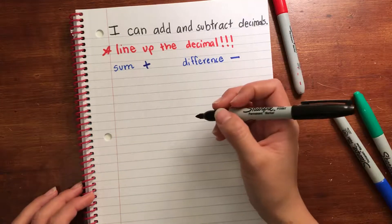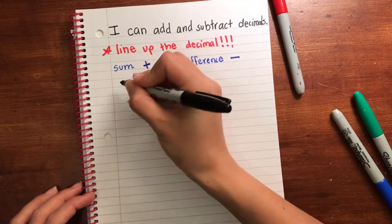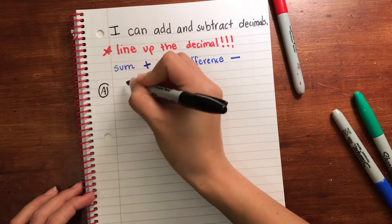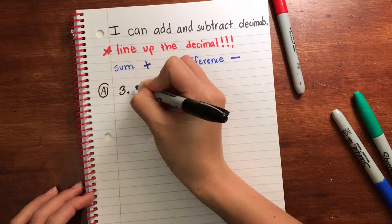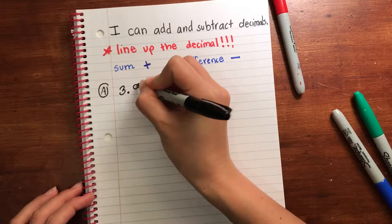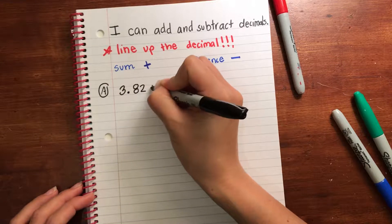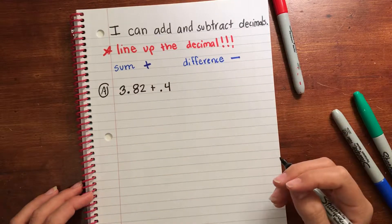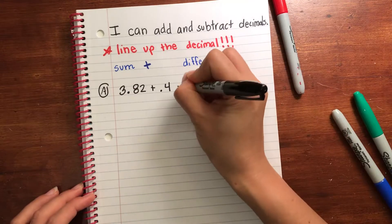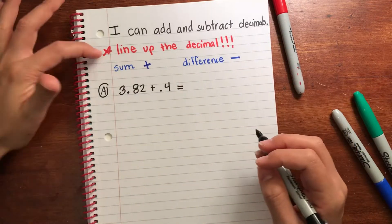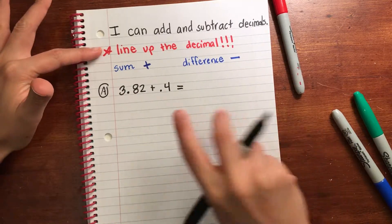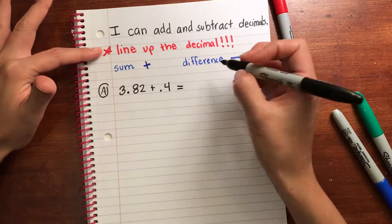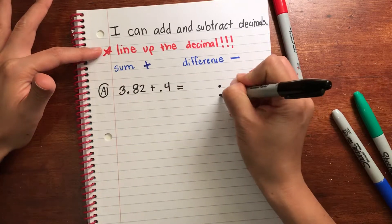Okay, let's do 3.82 plus four tenths. Now when we add and subtract decimals we have to line up the decimal. So if I have two numbers, I'm gonna line up the decimal.